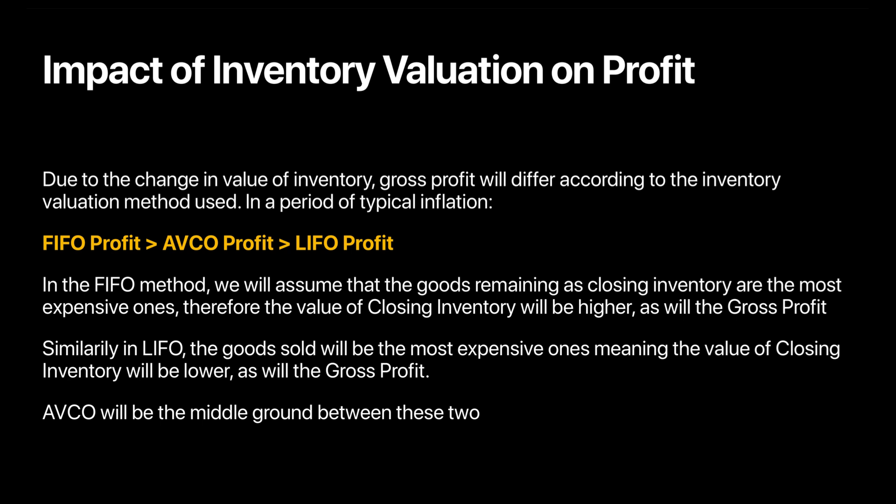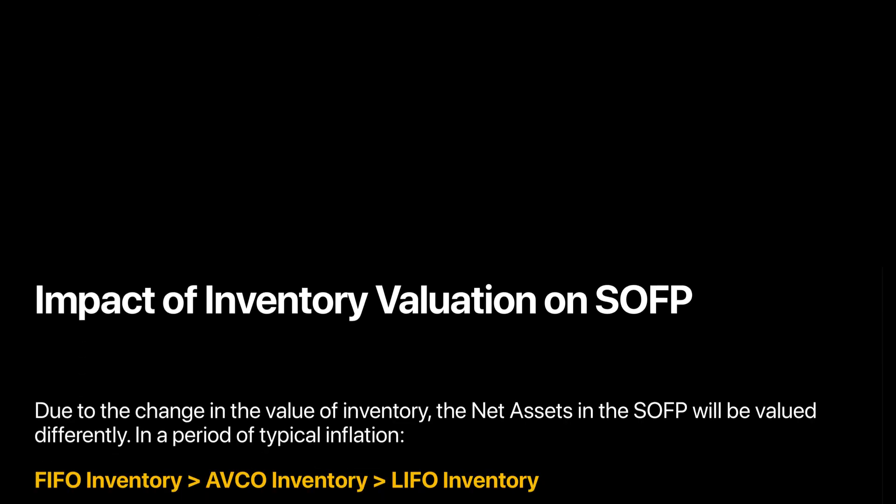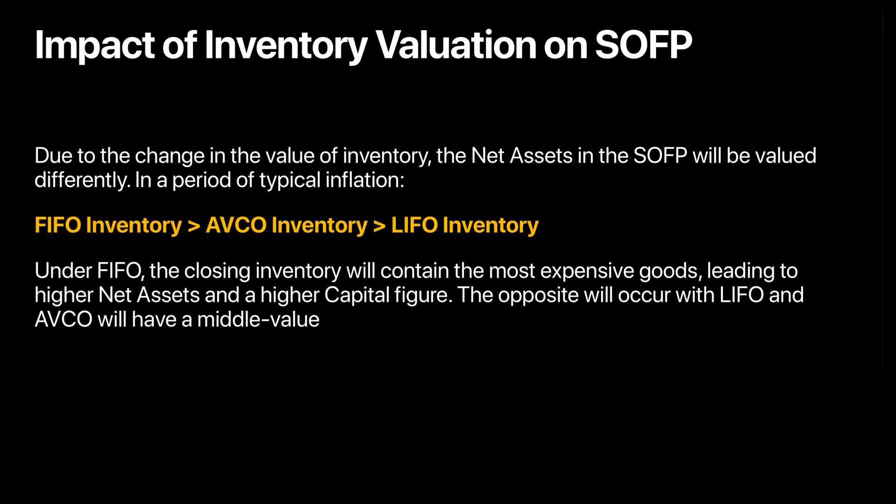One reason LIFO is not accepted around the world is that it results in a lower profit, which can help companies reduce the amount of tax they pay to the government. We should always remember: FIFO gives the highest profit, AVCO gives a higher profit than LIFO. Similarly, there are implications for inventory value. FIFO gives the highest inventory value because it includes the latest, most expensive items as unsold inventory. LIFO has the cheapest, oldest units as unsold inventory, and AVCO lies in the middle. So under FIFO, both profit and asset value are higher; under LIFO they are lower; and AVCO falls in between since it is valued at an average price.